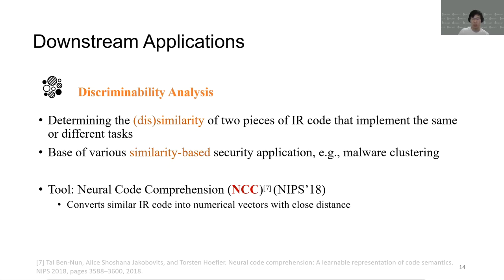Discriminability analysis determines the similarity of two pieces of IR code that implement the same or different task. It is the base of various similarity-based security applications. For instance, malware clustering and code plagiarism detection. We reuse the coding embedding tool, NCC published in Ips 2018, which converts similar IR code into numerical vectors with close distance.